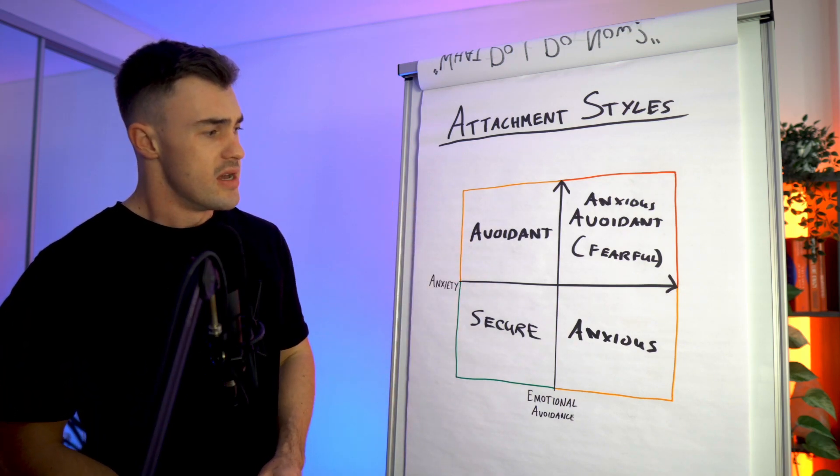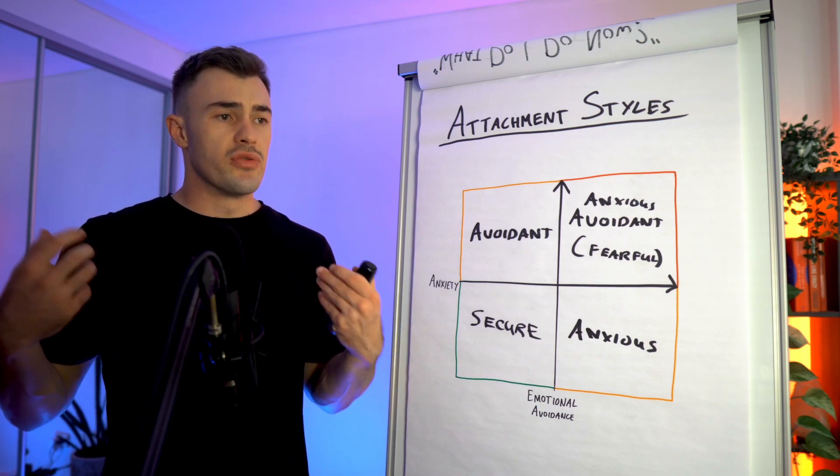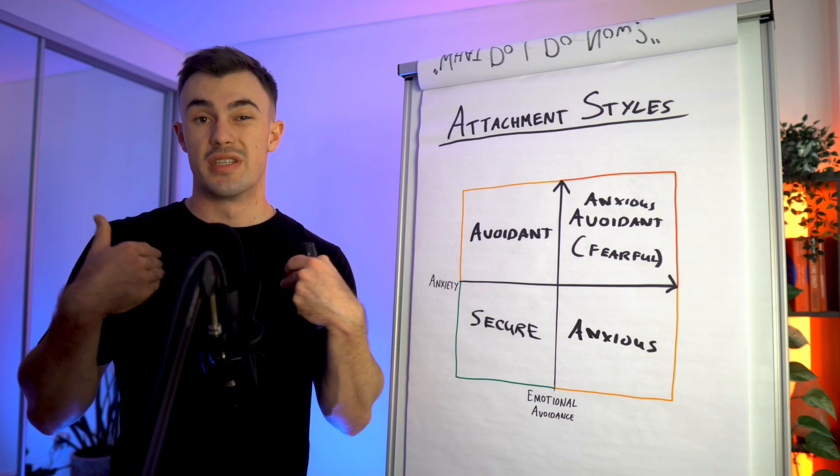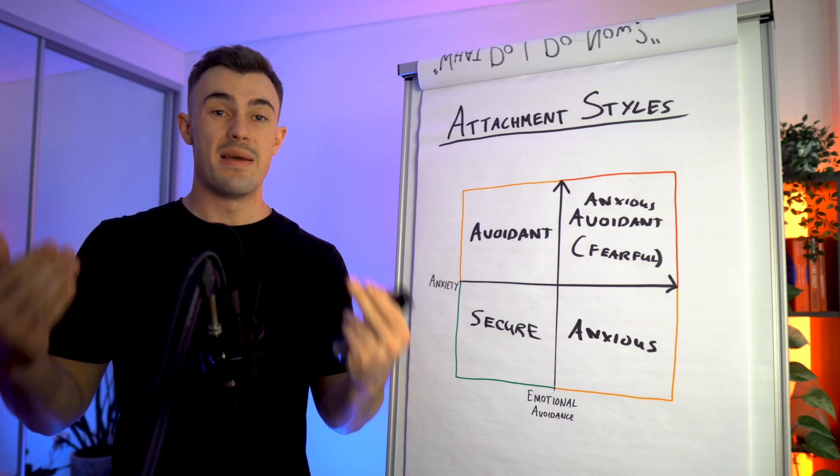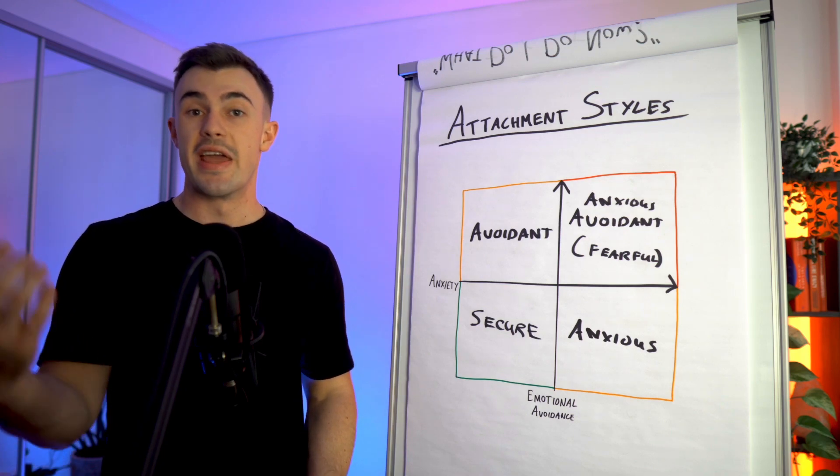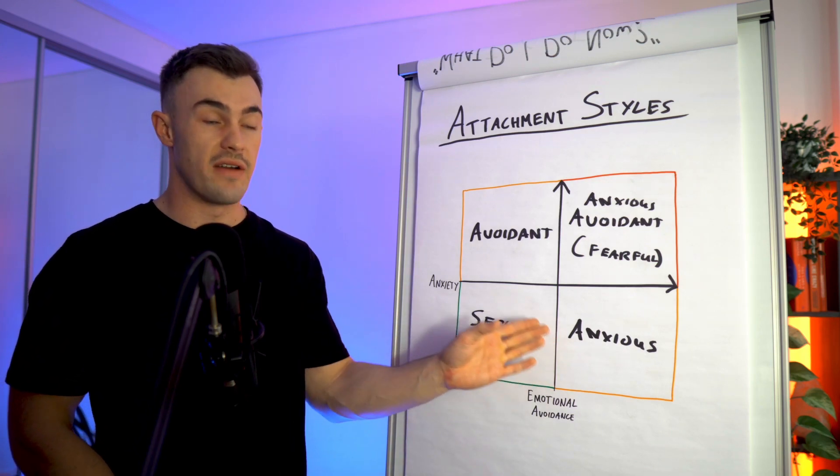Now the avoidant types have a need to really develop emotional intelligence and that doesn't only mean emotional intelligence within themselves, but also emotional intelligence and empathy with being able to understand their partner's emotions and their attachment style and the fact that they do have these anxious needs.